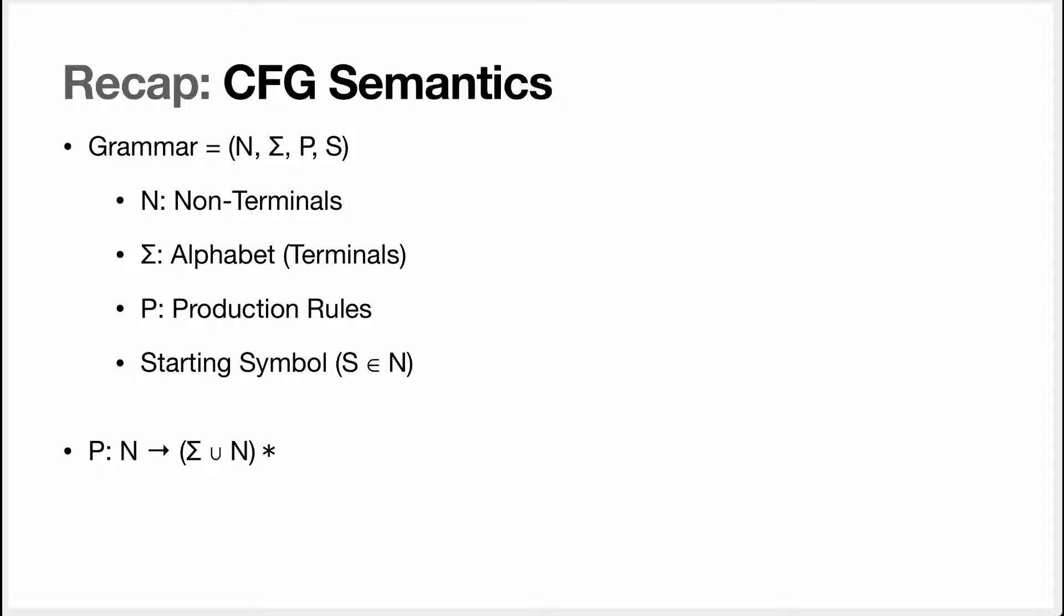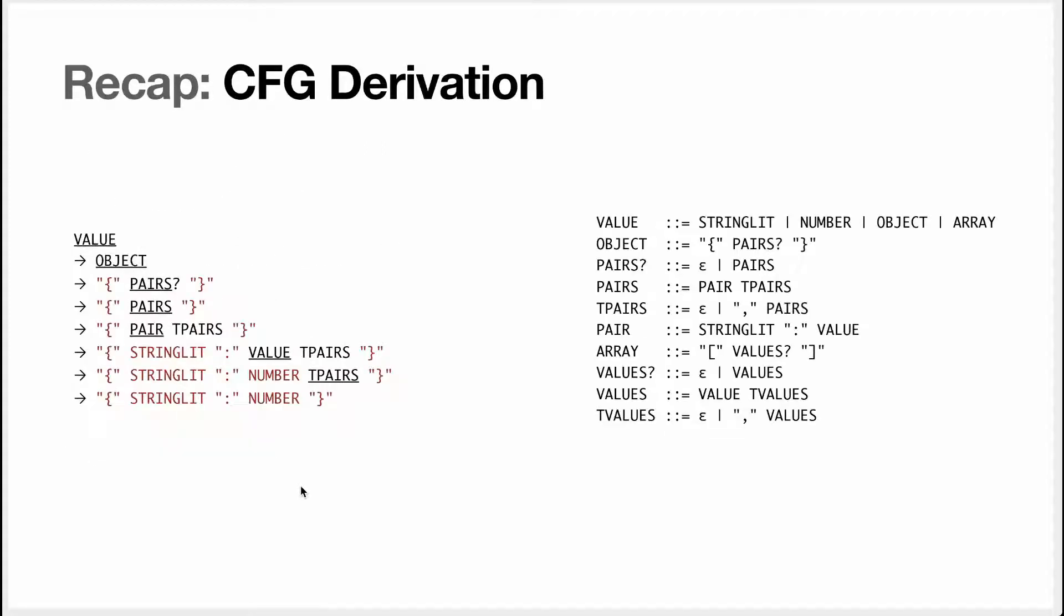Last time we saw that CFGs are defined by the four tuples which contains non-terminals, terminals, production rules and the starting symbol. Production rules have the non-terminal on the left and a string of symbols which can be terminals and non-terminals on the right. The semantics of a CFG is that a sentence is in the language defined by CFG only if it can be obtained by derivation by using the production rules of the grammar.